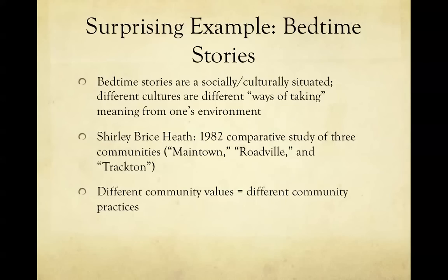She looked at literate practices in three different communities in North Carolina — what she called Main Town, Roadville, and Tracton. Those are pseudonyms for three communities made up of different social and socioeconomic classes and different racial demographics. Main Town was a middle-class, mostly white community with white-collar workers. Roadville was more blue-collar, still mostly white, with many mill workers. Tracton was a mostly African-American community, also doing labor, and significantly poorer than the other two.